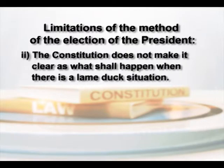Secondly, the Constitution does not make clear what shall happen if there is a lame duck situation. The 11th Amendment Act of 1961 provides that the election of the President should not be invalid even if there exist certain vacancies in the Electoral College. However, it does not make clear what shall happen if President's Rule exists in a particular state, as happened in Gujarat in 1974, or if a half-state emergency is declared, as was the case in Punjab in 1966.